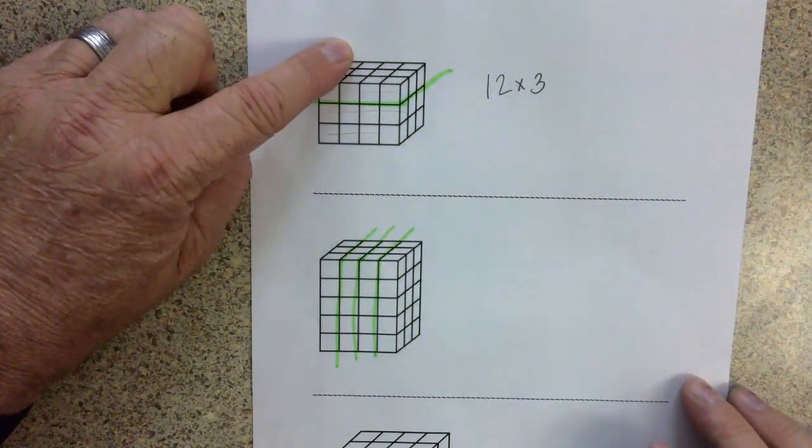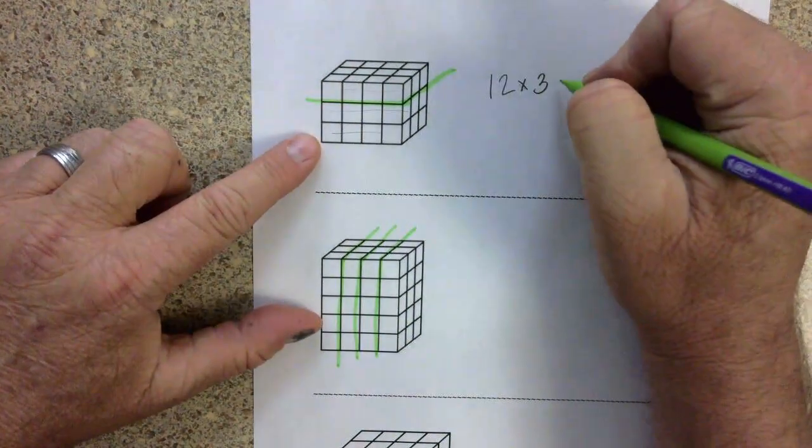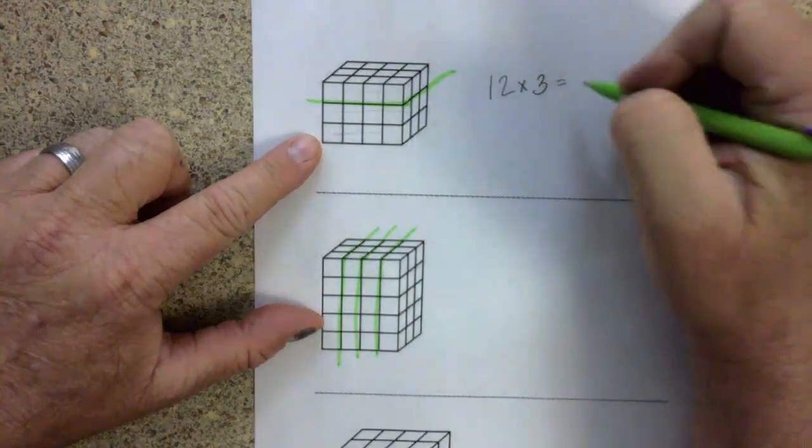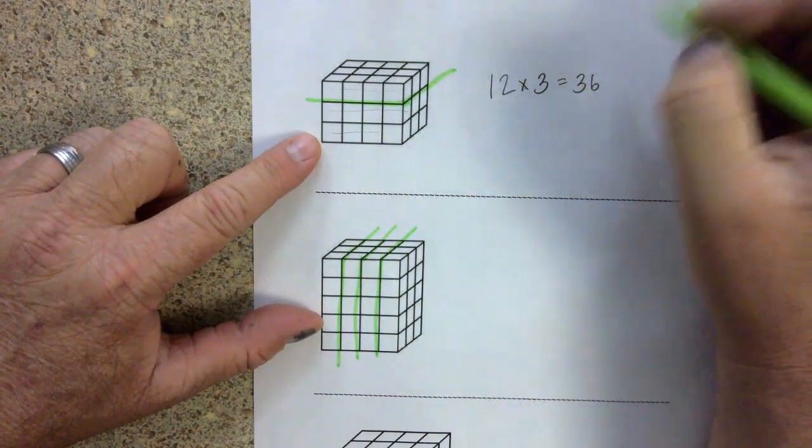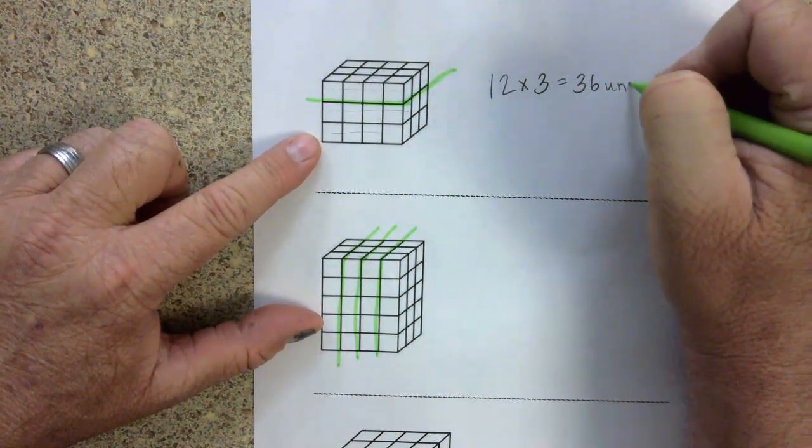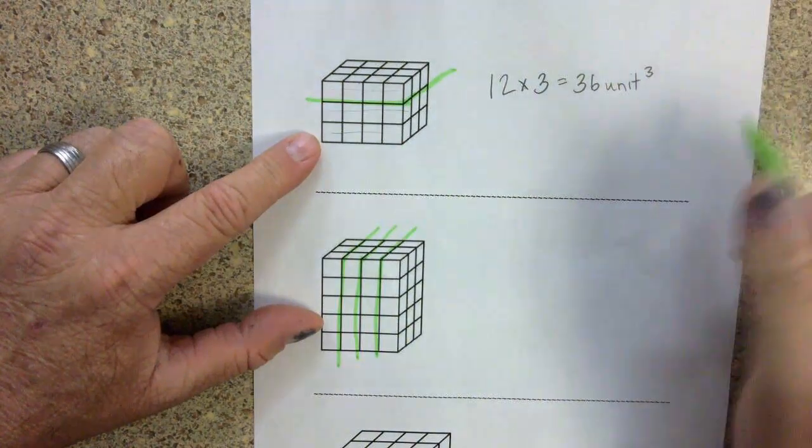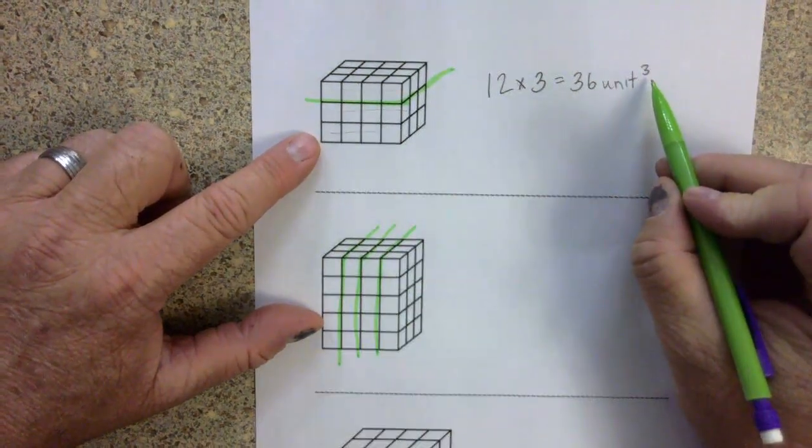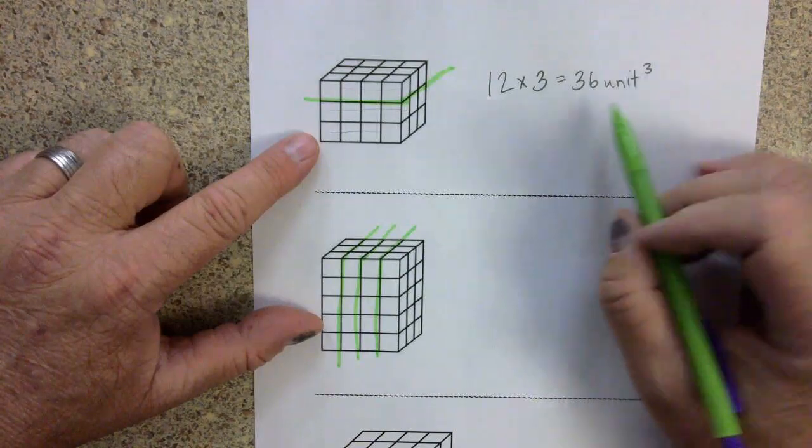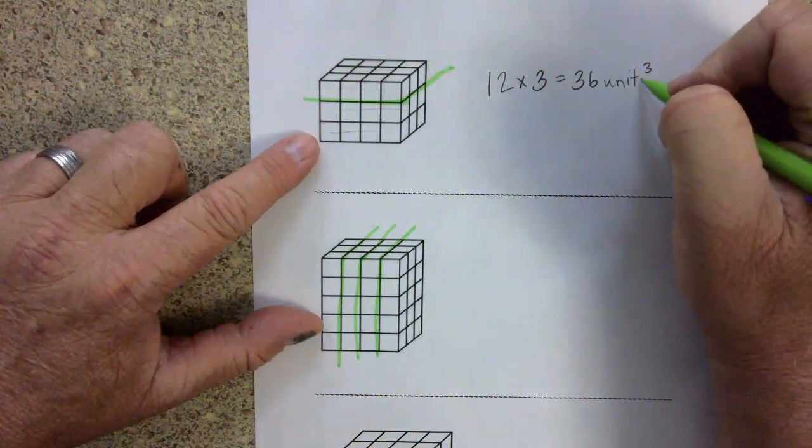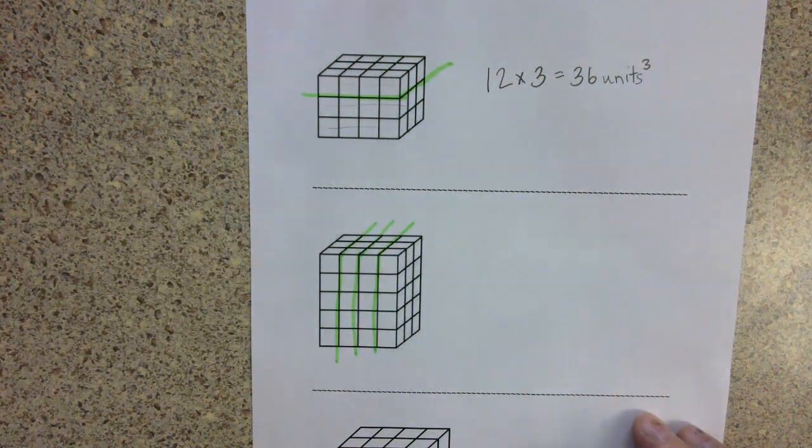So 12 cubes in each layer times 3 layers is 12 times 3, which is 36 cubic units. And we do the little 3 exponent or the little floating 3 to show that that is cubed.